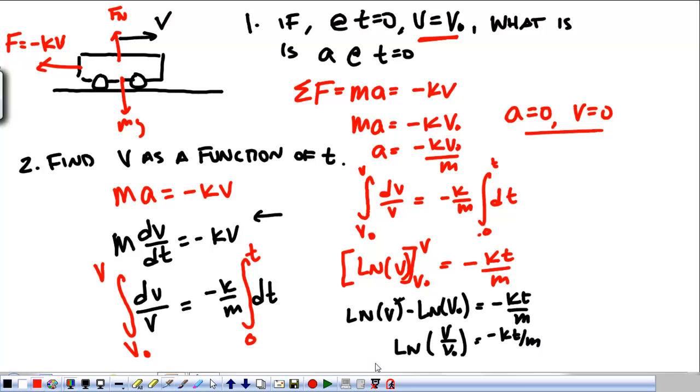We're going to do my favorite part. Make each side the exponent of E. And so, what we're going to get, running out a little bit of space, but we have V over V0 equals e to the negative Kt over M. Solve that for V, and we got V equals V0 times e to the negative Kt over M.